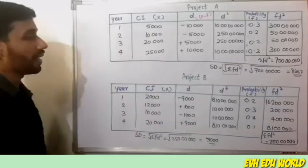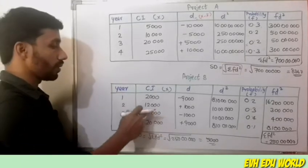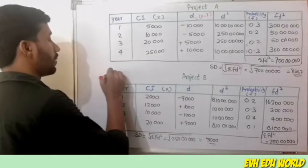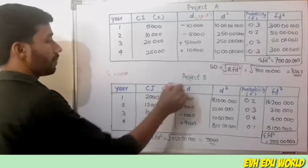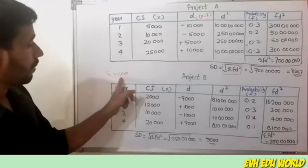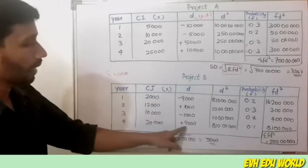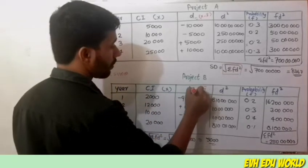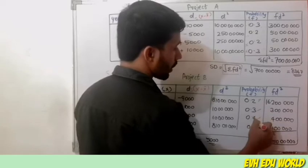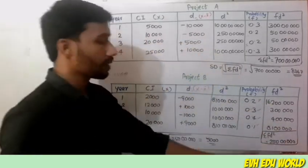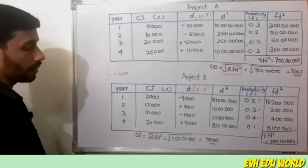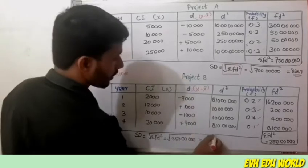For Project B, x̄ = 11,000. The deviations are: 2,000 − 11,000 = −9,000; 12,000 − 11,000 = 1,000; 10,000 − 11,000 = −1,000; 20,000 − 11,000 = 9,000. We square each deviation, multiply by probability, and sum to get sigma fd² = 2 crore 50 lakhs. SD for Project B = √(2,50,00,000) = 5,000.